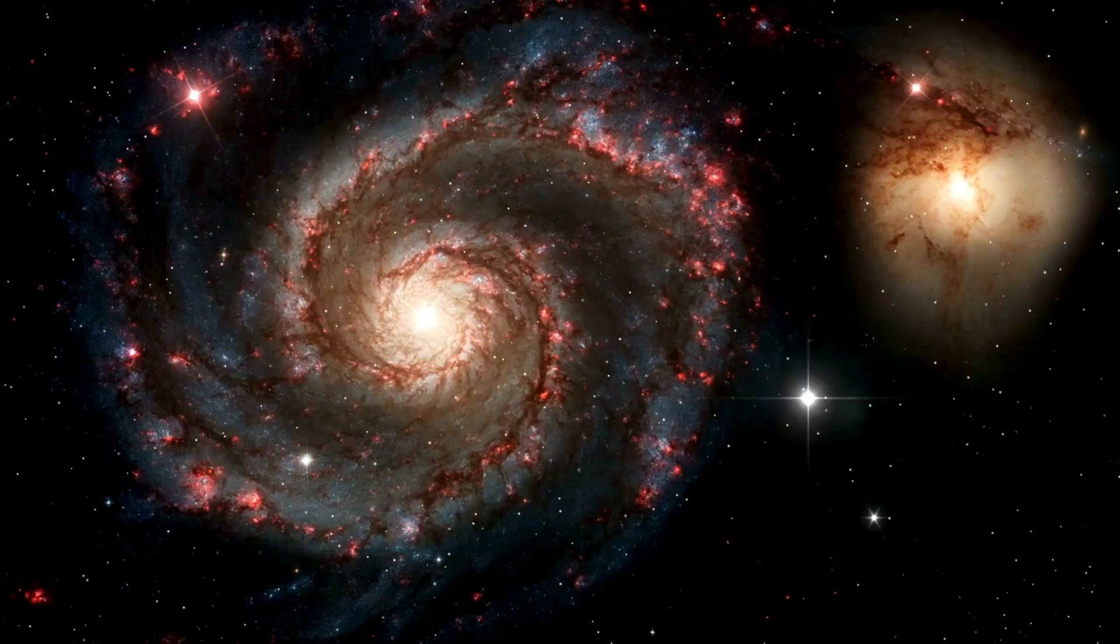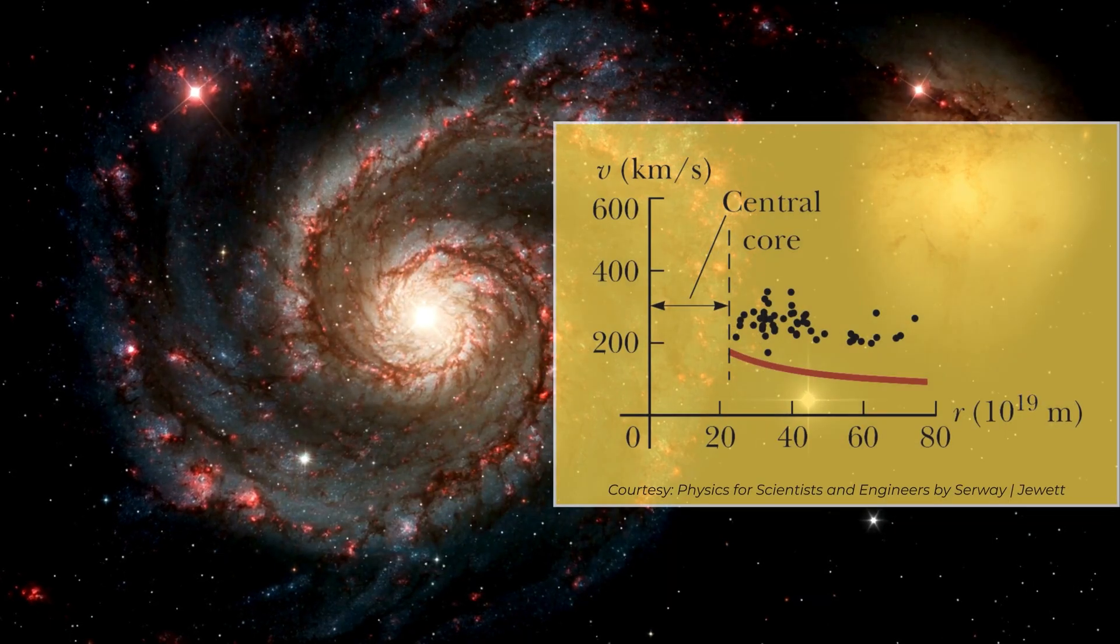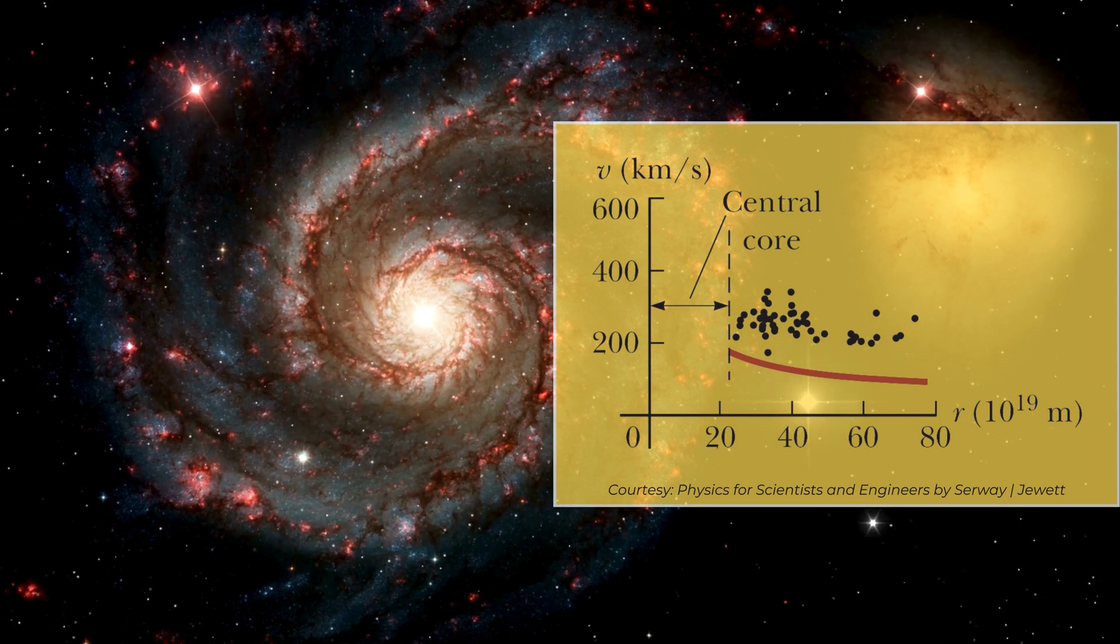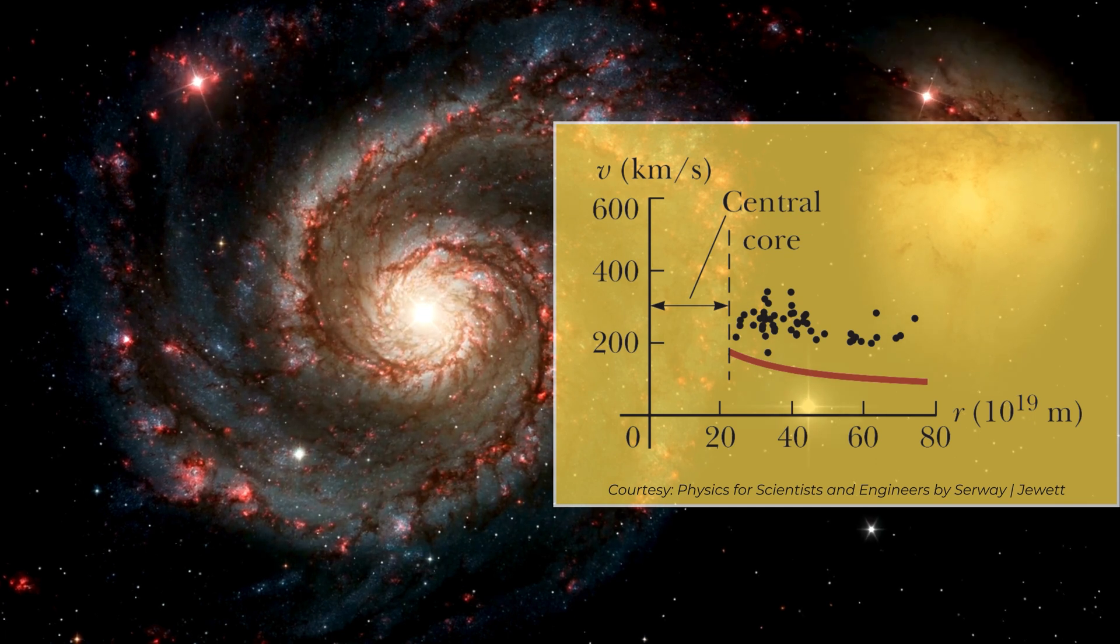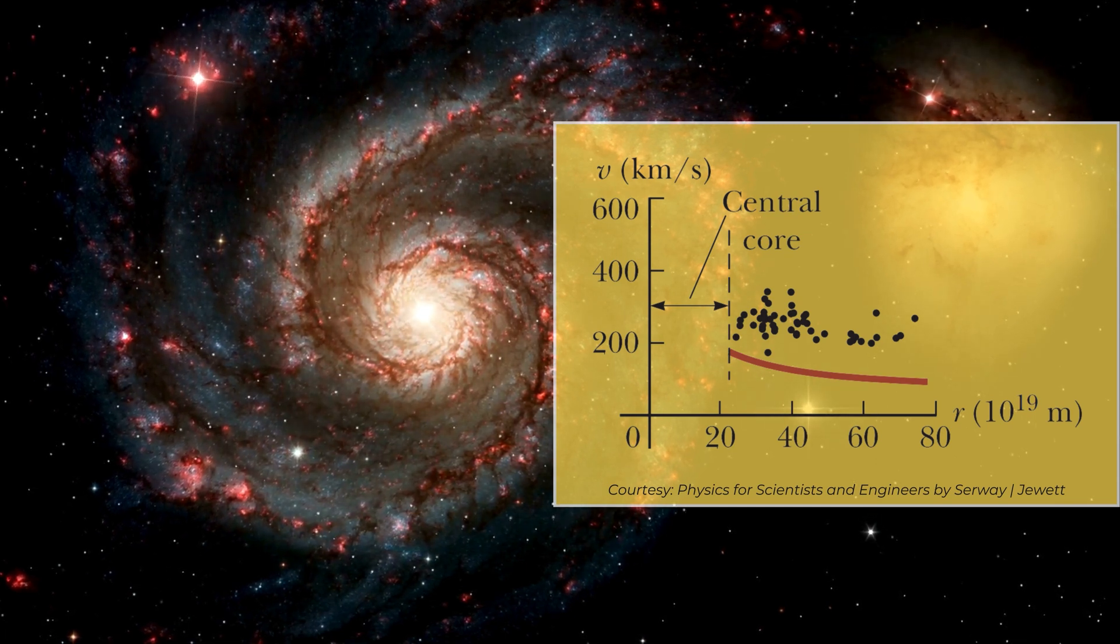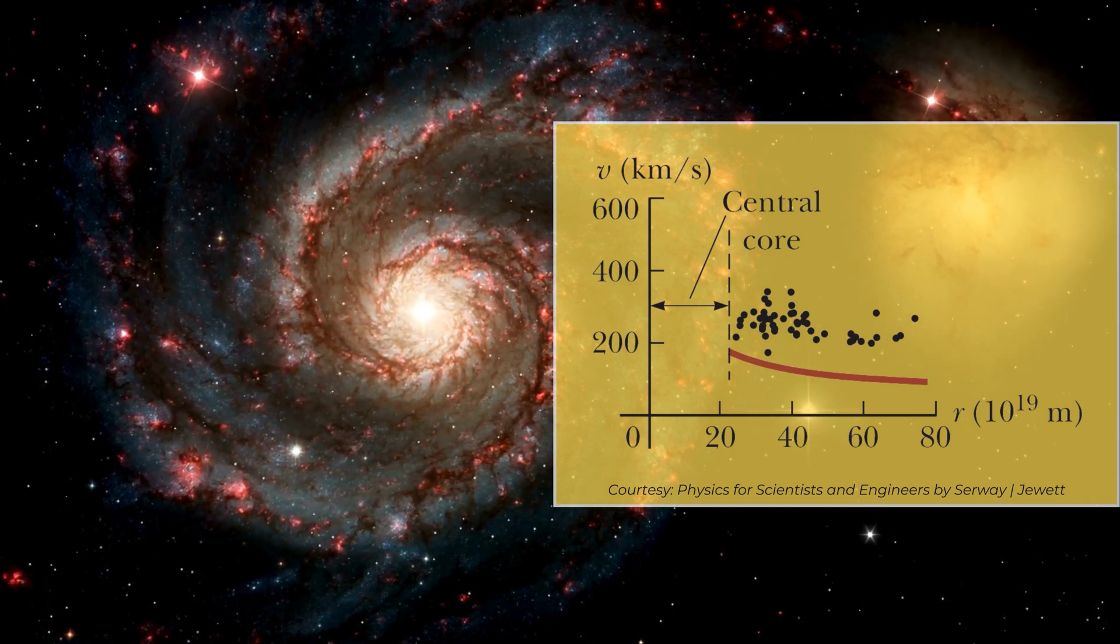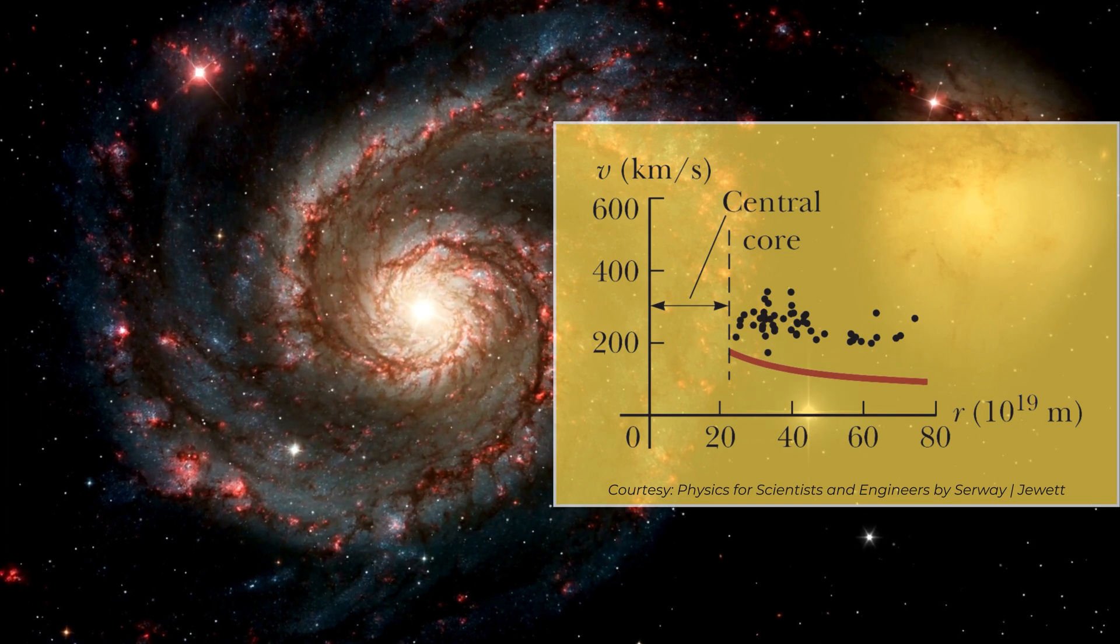But there's a twist. This graph here shows what happens in the Andromeda galaxy. It tells us how fast things are moving at different distances from the center of the galaxy. The squiggly line in reddish-brown shows how fast things should move if they're going around the heavy stuff in the middle in a circle.